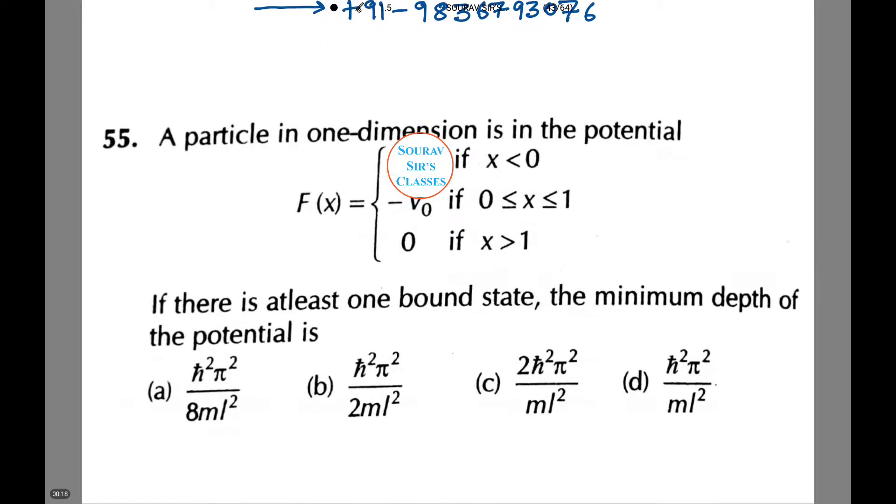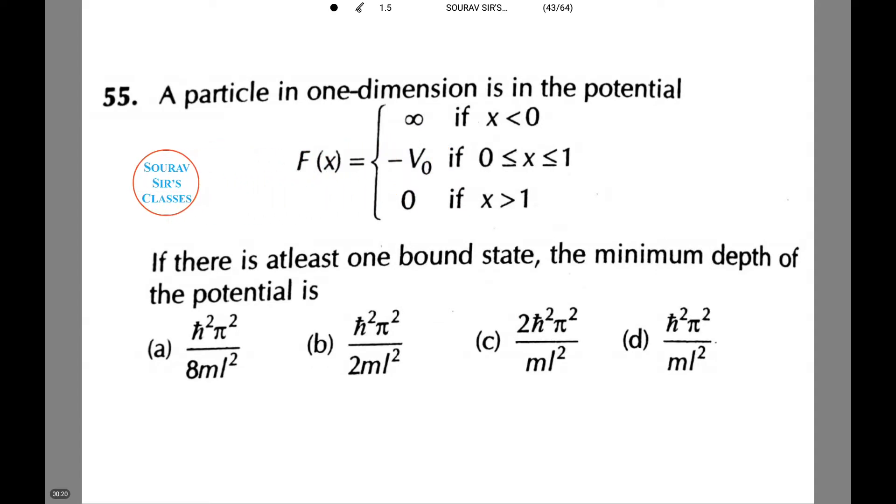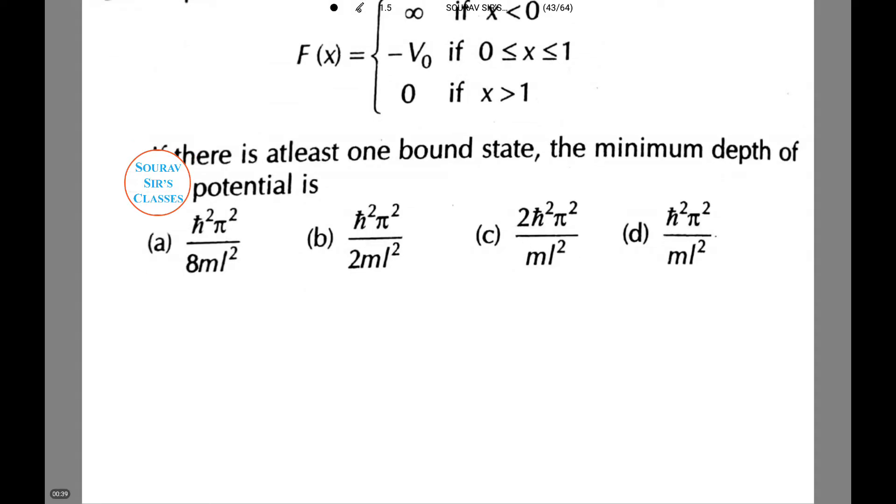Let's see the first question. A particle in one dimension is in the potential fx such that it equals infinity if x less than 0, minus v0 when x lies between 0 and 1, and if x is greater than 1 it tends to 0. If there is at least one bound state, the minimum depth of the potential is among the following.